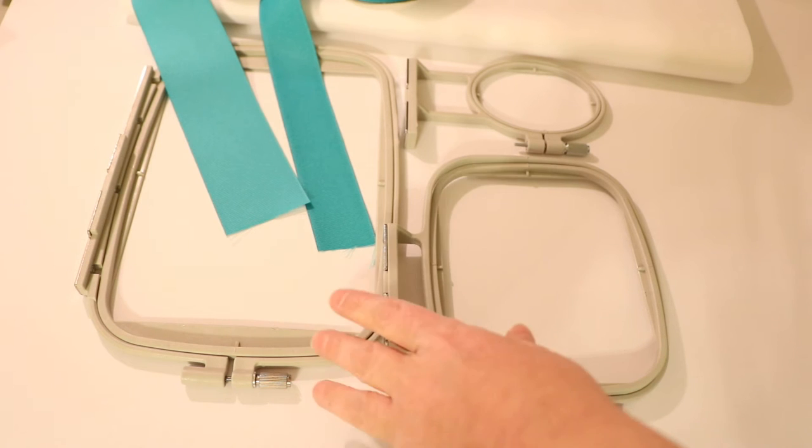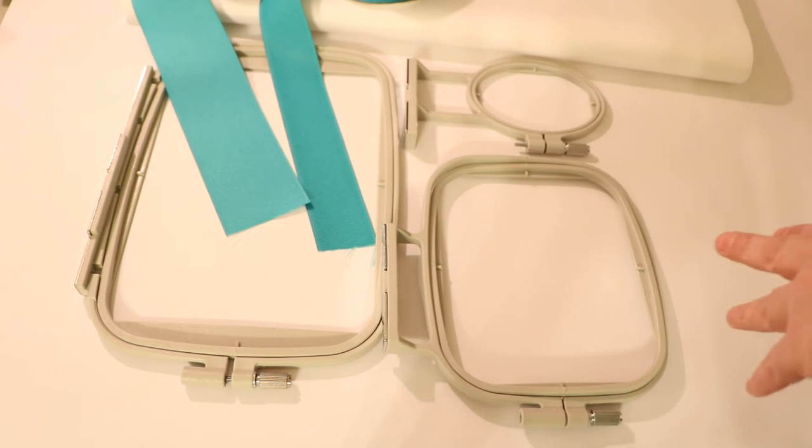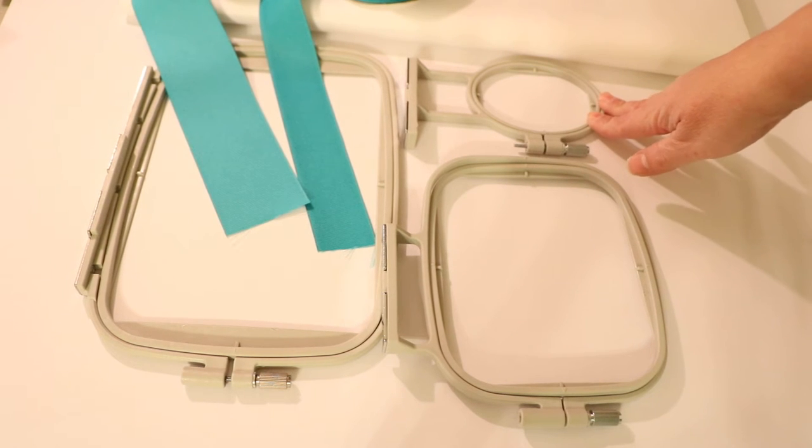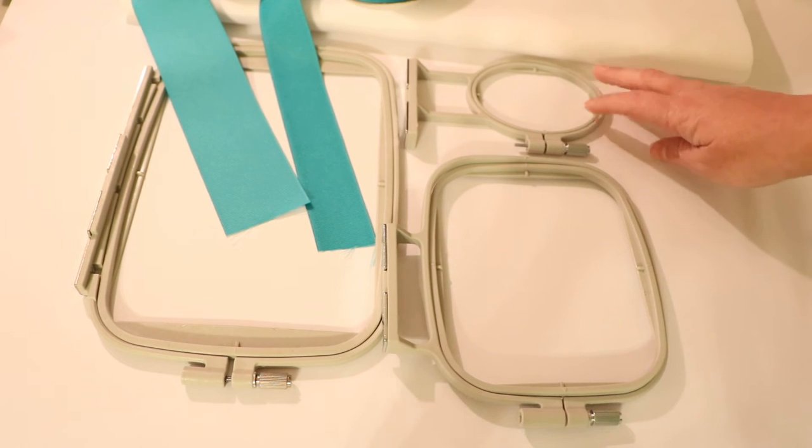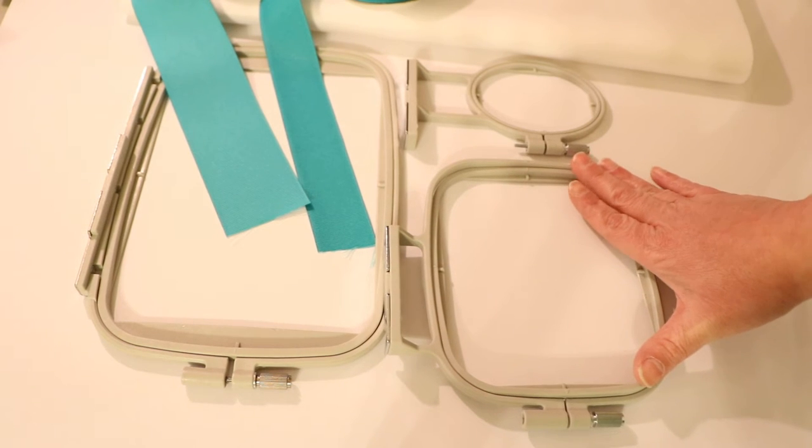So this just works out a little easier for me. I have three hoop sizes here: the five by seven, the four by four, and then the two inch hoop. This one's really good for using small ribbon but it's also really good for using scrap pieces as a stabilizer, so it saves you some money in the long run.